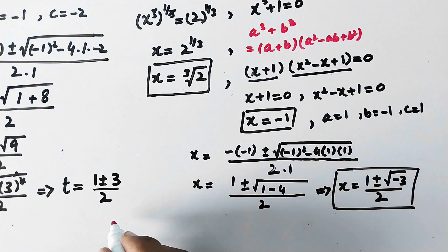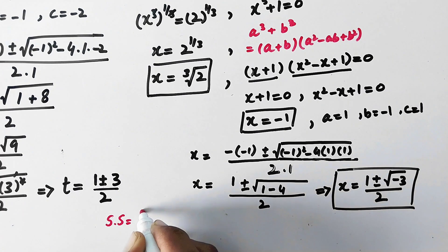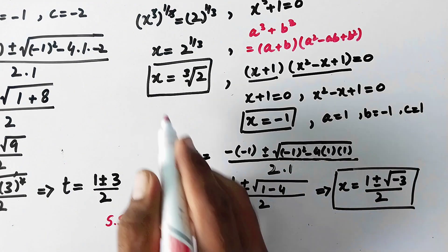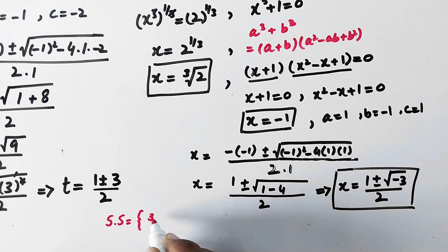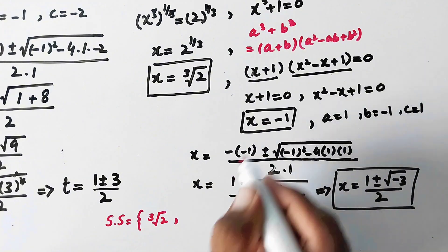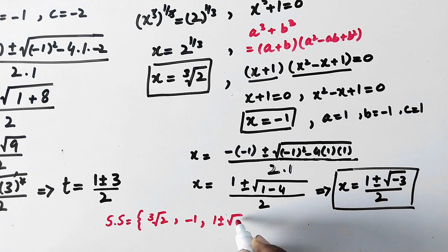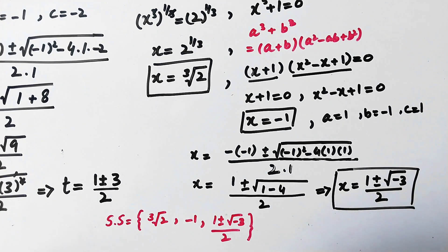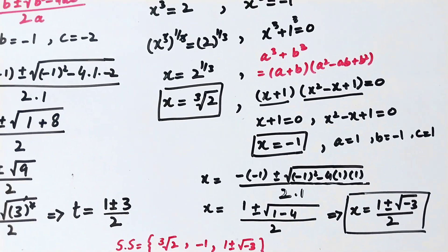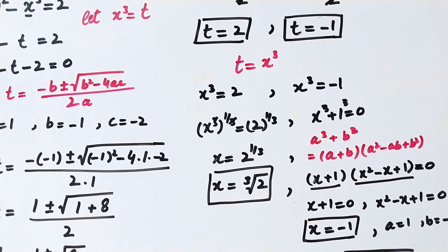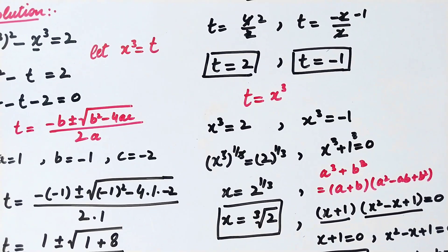So the solution set of x is: cube root of 2, minus 1, and 1 plus or minus square root of minus 3, over 2. Hope you would have liked the video. Please like and subscribe to my channel. Thanks for watching, take care, bye.